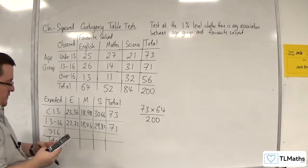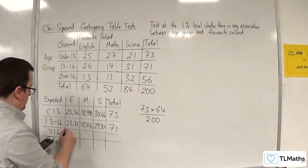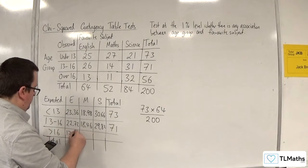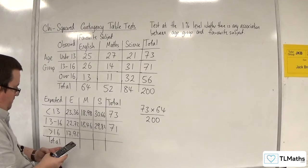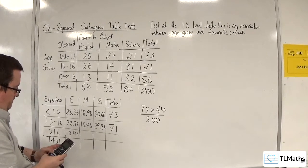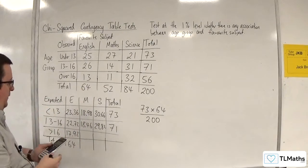Right, this one next. 56 times 64 divided by 200 is 17.92. Right, I'm going to add up those values there. And that's 64, which tallies with that number there. Excellent.